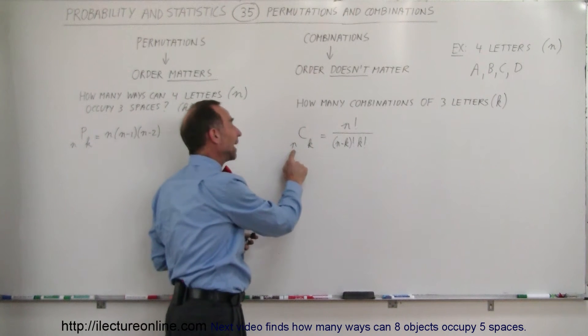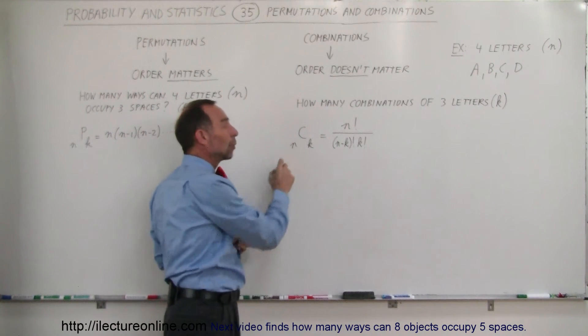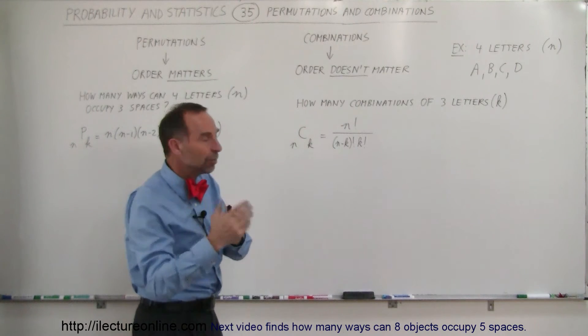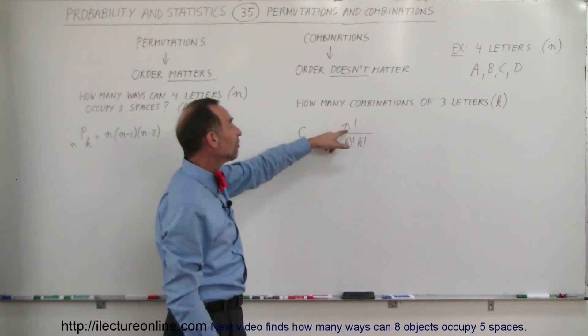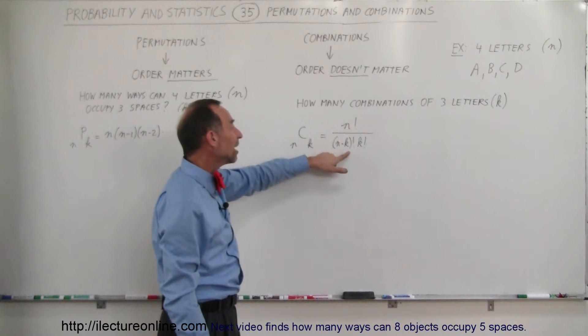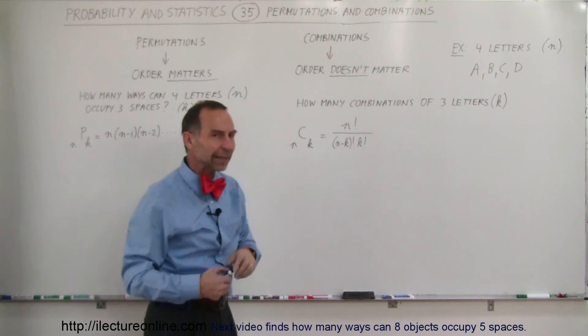We have a total of N letters, in this case four, and we're going to take K of them, three of them, to see how many combinations we can make. The equation is N factorial divided by N minus K factorial divided by K factorial.